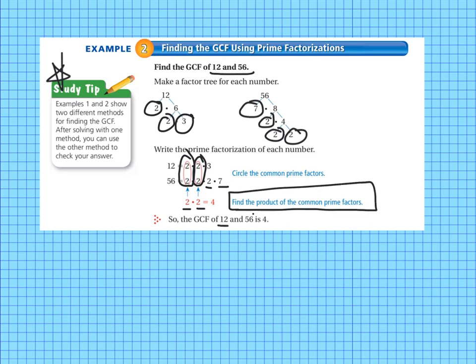So the GCF of 12 and 56 is 4. So the value of doing greatest common factor with prime factorizations instead of factor rainbows or lists of factors is that when you get to larger numbers, it is difficult to list all of the factors. You've missed some. So sometimes your greatest common factor gets missed. So it's easier to do it with prime factorization. There's another reason also, but I'll tell you that secret in another lesson.